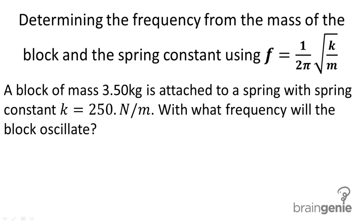Determining the frequency from the mass of the block and the spring constant using f equals 1 divided by 2 pi times the square root of k divided by m. A block of mass 3.5 kilograms is attached to a spring with spring constant k equals 250 newtons per meter. With what frequency will the block oscillate?